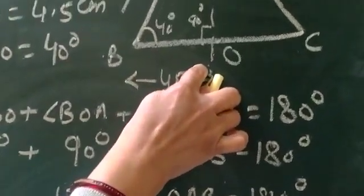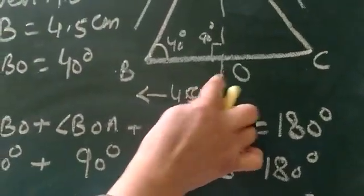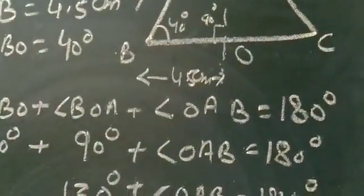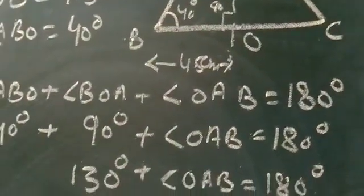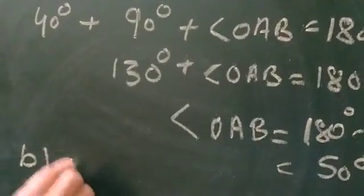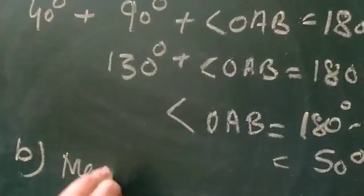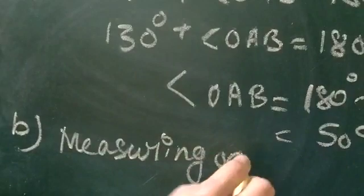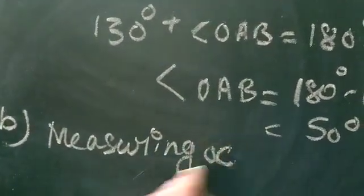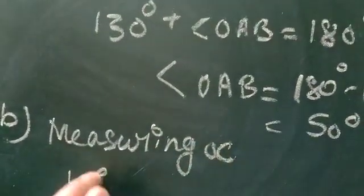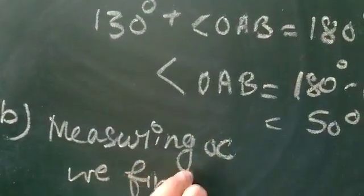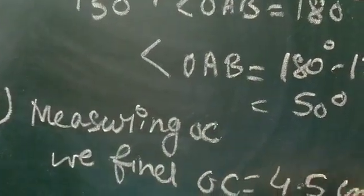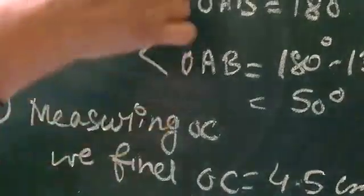That was the first part — finding the angle. For the second part, since OB is equal to 4.5 and this is an isosceles triangle, therefore OC is equal to 4.5. When we measure OC, we find OC equals 4.5 cm because it is an isosceles triangle.